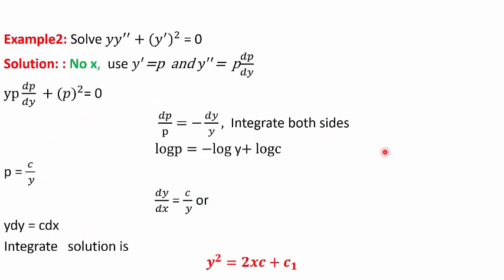In the second example, we are asked to solve yy'' + (y')² = 0. There is no x term. Take the substitution y' = p and y'' = p·dp/dy. Substituting into the second-order differential equation, we get yp·dp/dy + p² = 0. Separating variables gives dp/p = −dy/y. Integrating both sides, we get log p = −log y + log c, so the right-hand side is log(c/y).